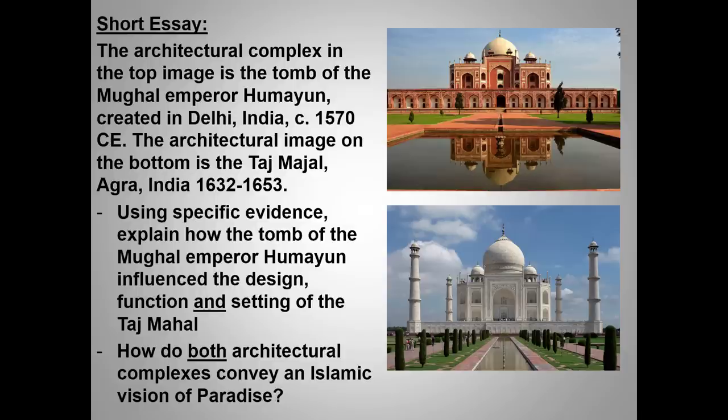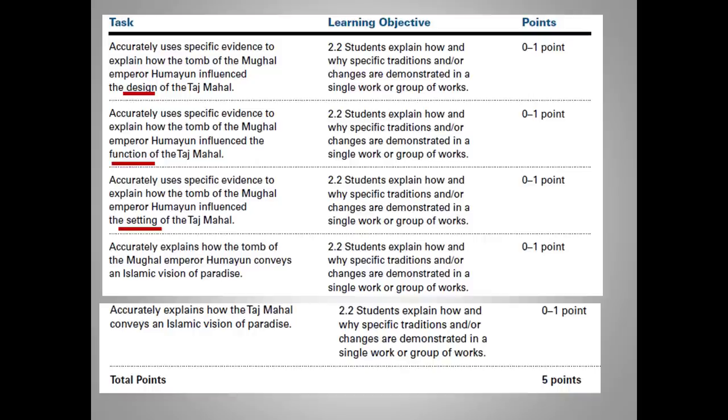What function do they share? They're both tombs. You have to remember that the Taj Mahal was a tomb, not a mosque — it was Shah Jahan's tomb for his favorite wife and later for himself. Here is the scoring rubric. As the wording of the question suggests, you get one point each for design, function, and setting.